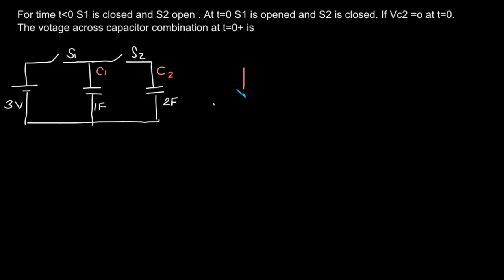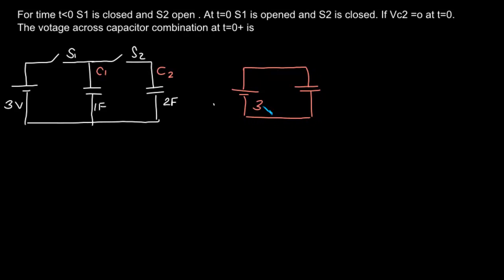For t less than 0, we have s1 closed and s2 opened. This will be the equivalent circuit. We have 3 volts here and 1 farad capacitance here. For t less than 0, the switch s1 was closed, so the capacitor will charge to a potential of 3 volts.